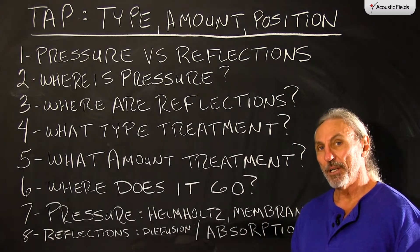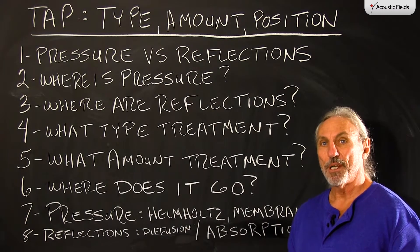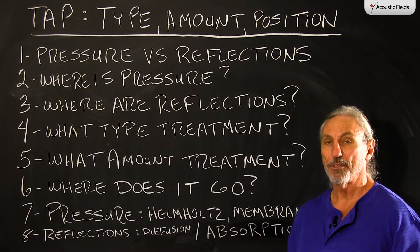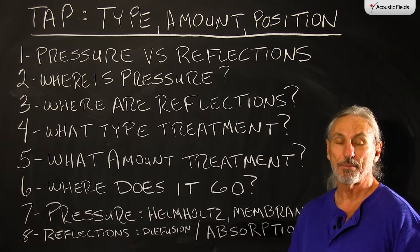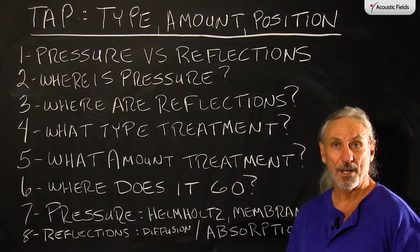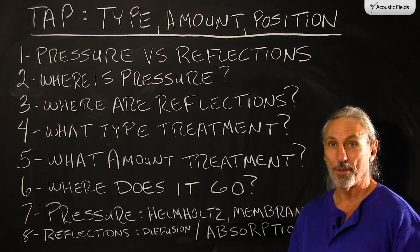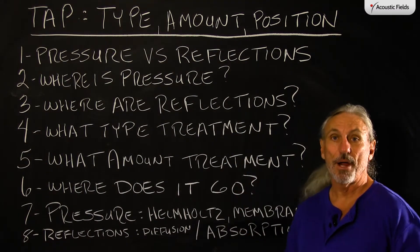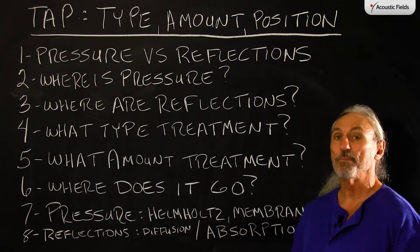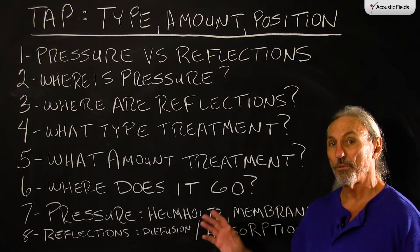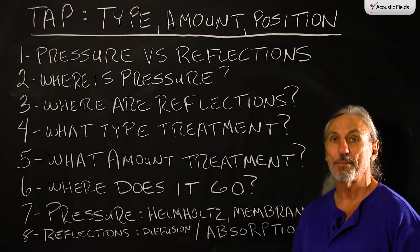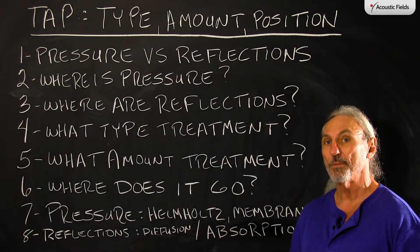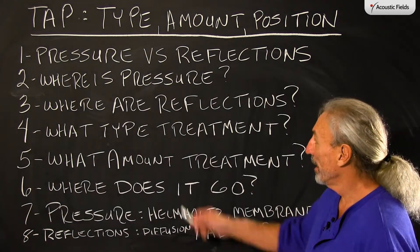I think people have a lot of misconceptions about the two types of technology. I know they have a lot of misconceptions about how much they need and where to put them. So let's use TAP as our acronym for Type, Amount, and Position, and walk through some of the steps we need to determine the answers to those.